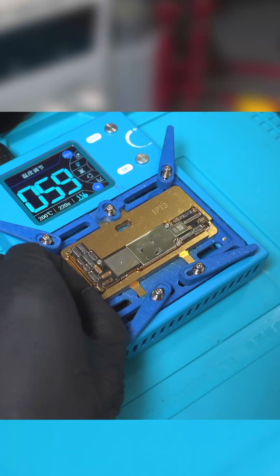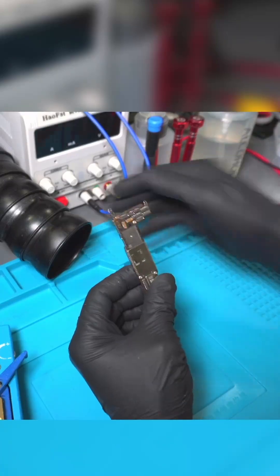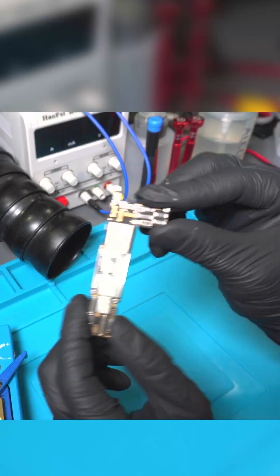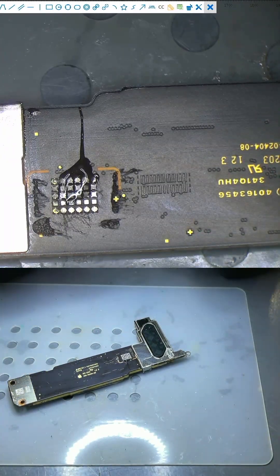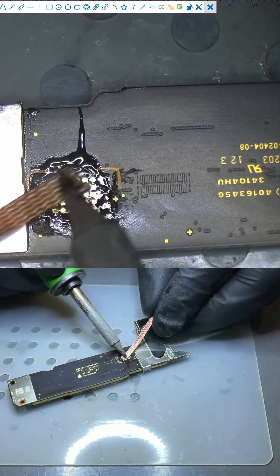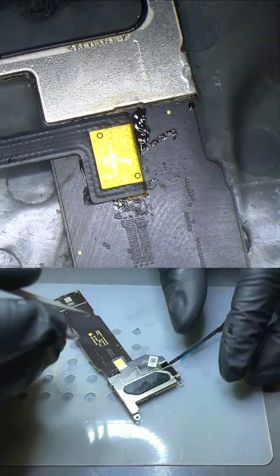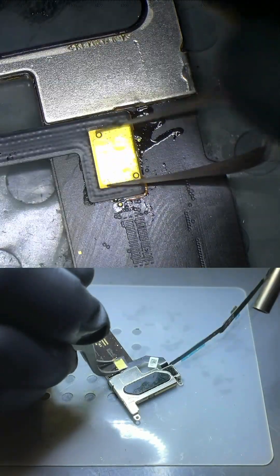We let that cool down, and as you can see, it is fully attached. We go under the microscope and attach the 5G antenna. We apply flux and clean it out one more time. We align the new antenna and apply heat at 250 degrees Celsius.